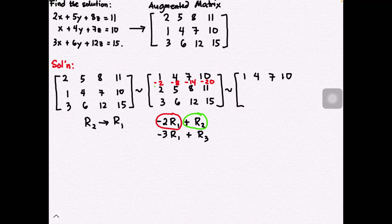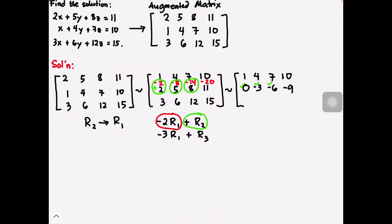Adding the products to the corresponding entries in the second row, the first entry of the second row becomes zero (negative two plus positive two). Next, negative eight plus five gives us negative three, negative 14 plus eight gives us negative six, and negative 20 plus 11 gives us negative nine.